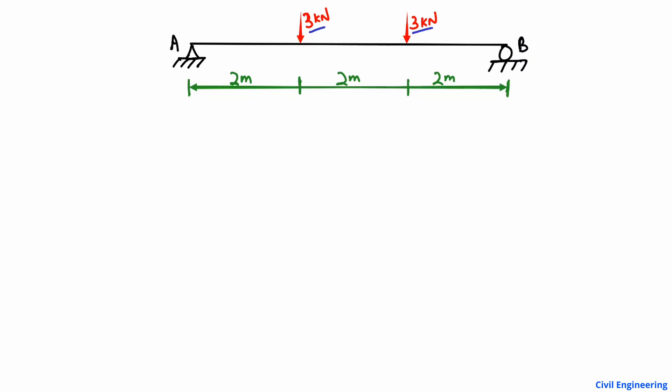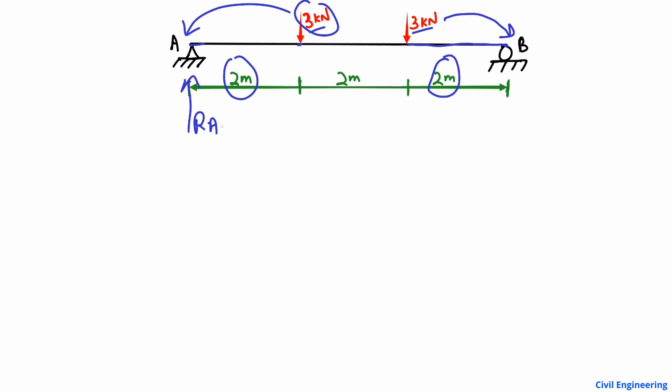Starting with the support reactions: this is a simply supported beam with symmetrical loading, so the support reactions are easy to find. The distance from the left support to the first load is 2 m, and the distance from the right support to the second load is also 2 m. Therefore, RA equals 3 kN.